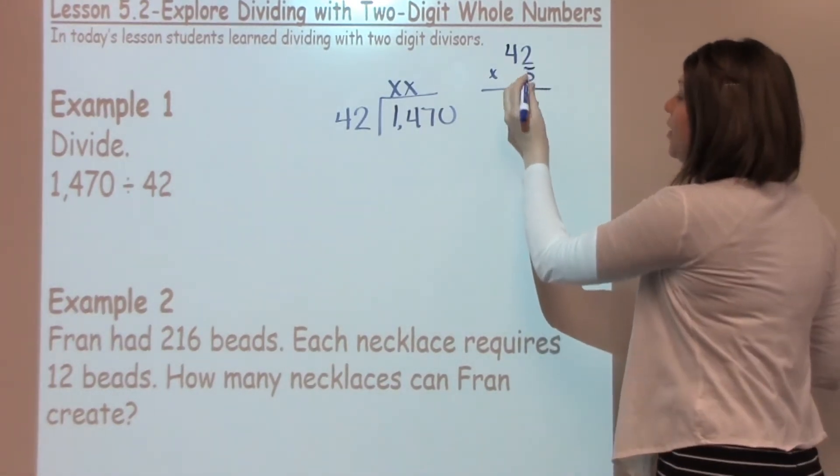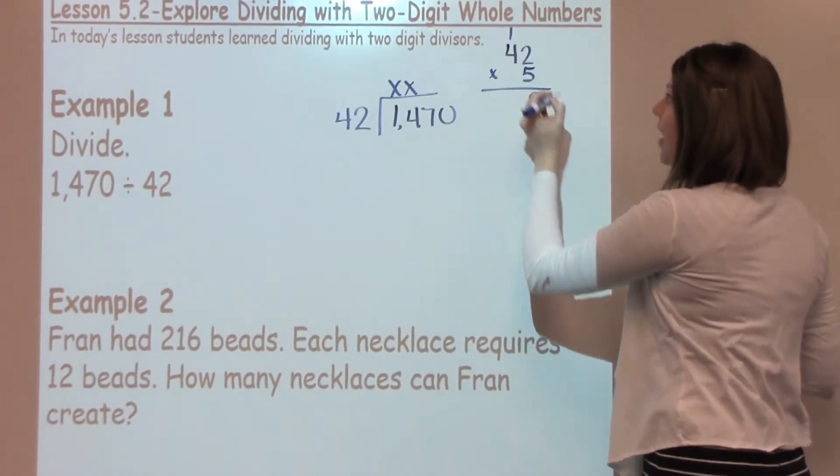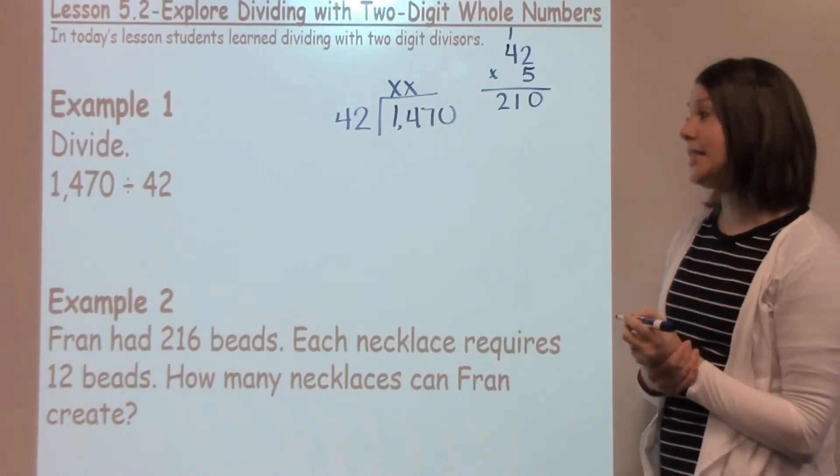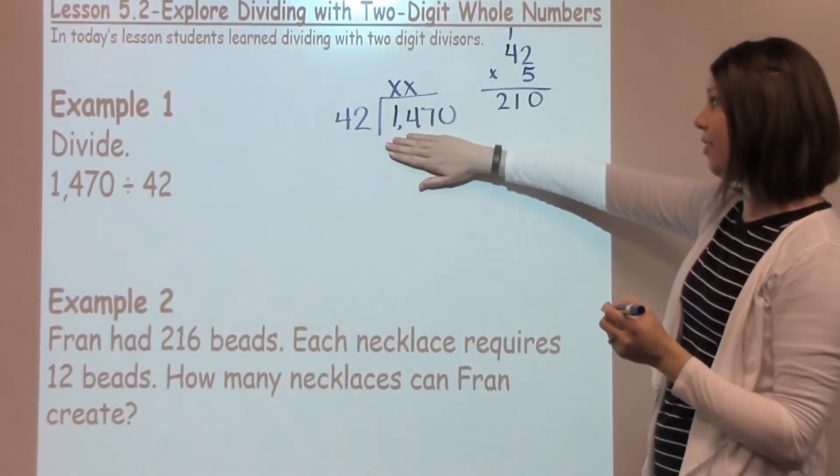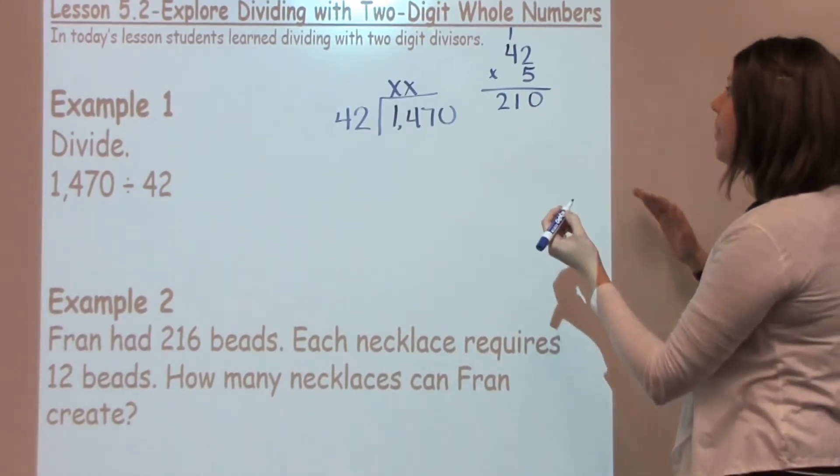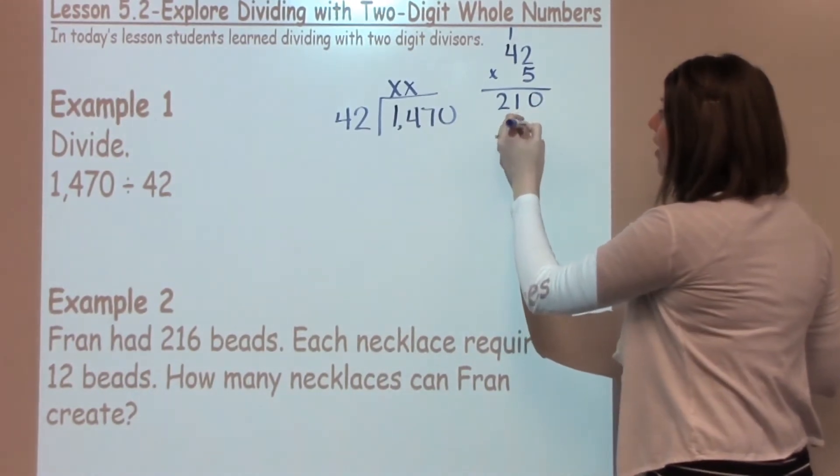When I take 2 times 5, I get 10. 4 times 2 is 20 plus 1 more is 21, so I've got 210. Looking at the 147, I see with my 5, I've gone over it. So I'm going to bump down a number and I'm going to try 3.